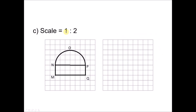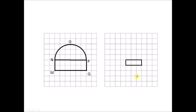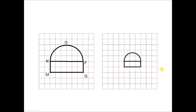For the scale 1 to 2, the scale drawing is smaller than the object — half the size. So for a side with 6 units in the object, the scale drawing is 3 units. For the semicircle, you draw it using a compass. The radius of the object is 3 units, so in the scale drawing the radius is 1.5 units. Draw the semicircle with the center marked and radius 1.5 units. Don't forget to label the vertices.